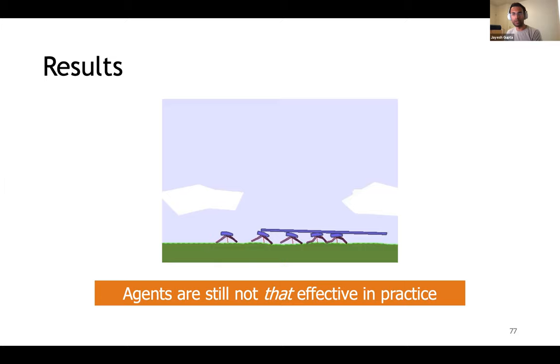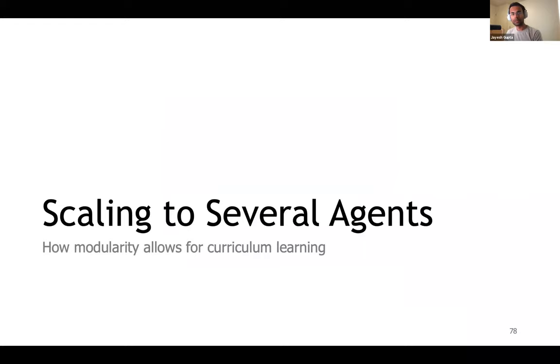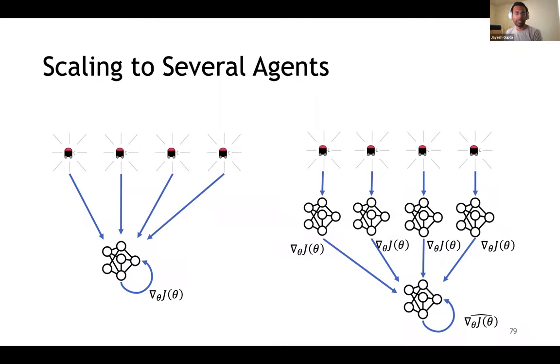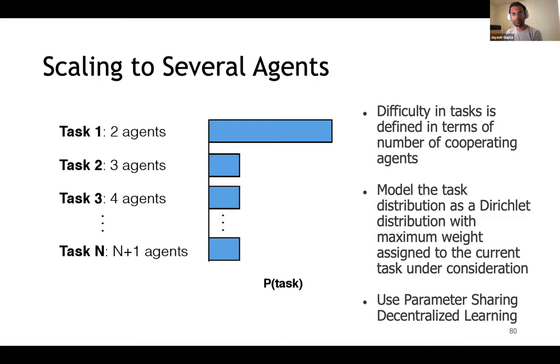We wondered whether the homogeneity assumption between the modules can allow us to do better. We realize that framing the problem as different agents sharing the same parameters for the policy allows us to design a very natural curriculum for the learner. This is because the learning problem is decoupled from the number of agents in the problem. The gradient is applied to the same shared set of parameters no matter the number of agents.